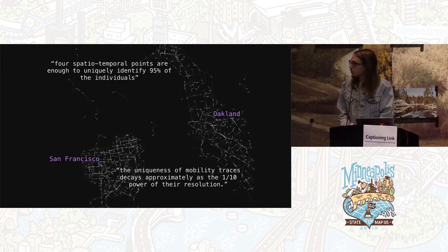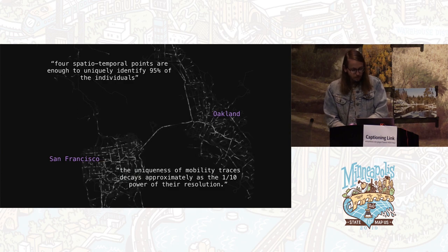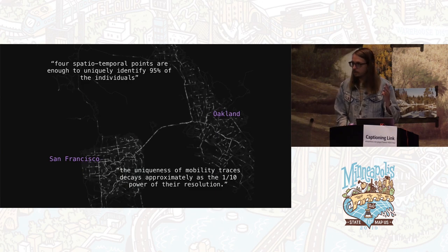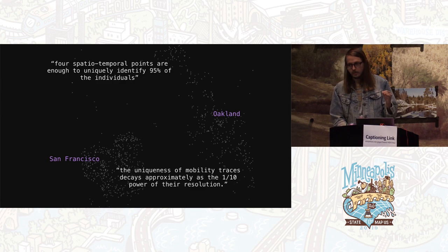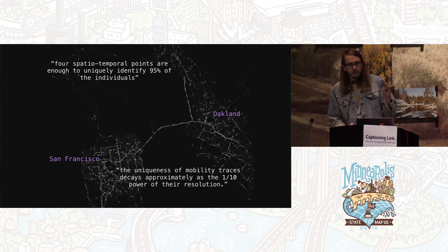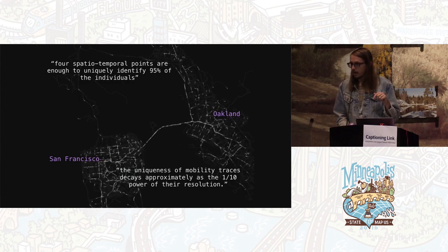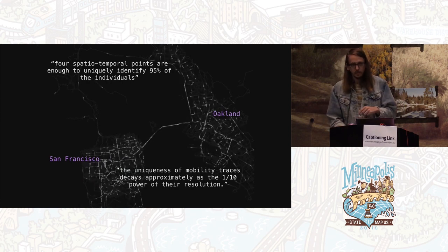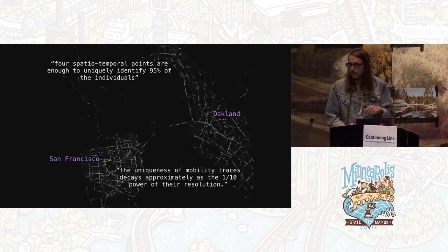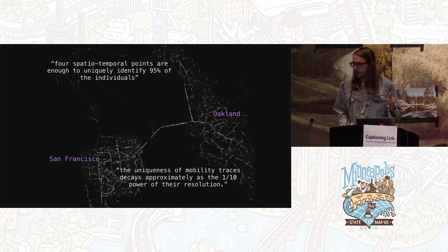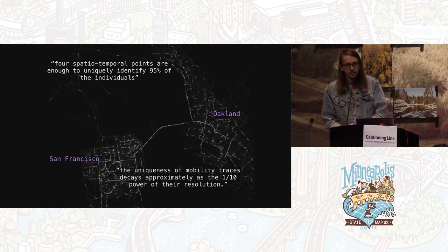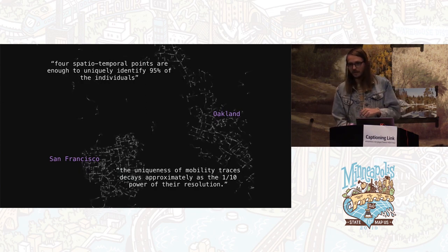There's a paper that came out published in Nature in 2013 called 'Unique in the Crowd: The Privacy Bounds of Human Mobility.' It found that it took just four random location points in a mobility data set — they had about a year and a half of mobility data — to uniquely identify 95% of the population. If you drop this down to just two points, you can still identify 50% of the population. So if you're malicious, it doesn't really matter if it's 50% accurate, as long as you can do that profitably.